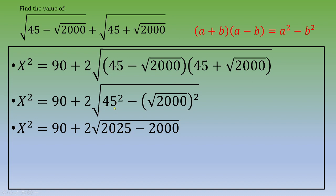So you end up with x² equals 90 plus 2 times square root of 25.